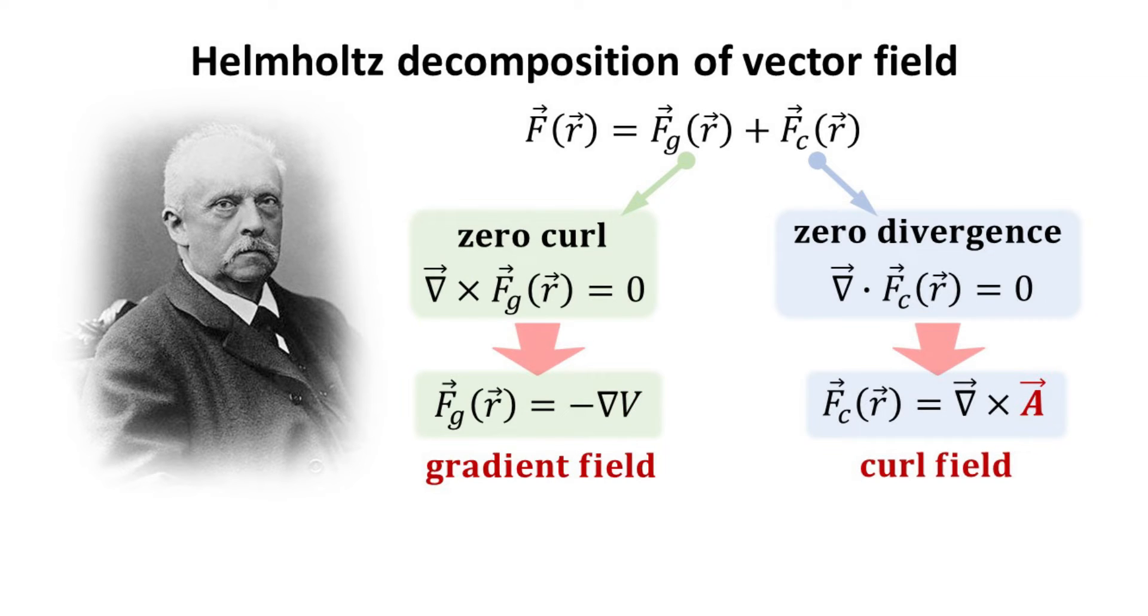F_C can be constructed from the curl of a vector field A. Thus, we also call F_C a curl field. The vector field A is called the vector potential.